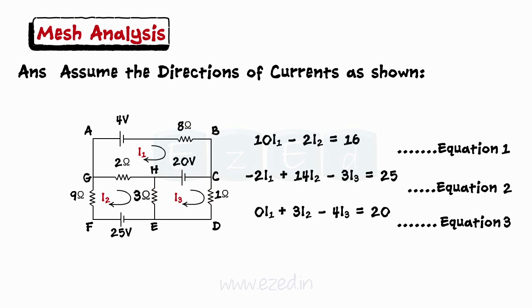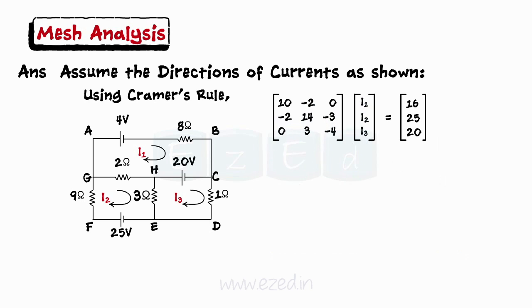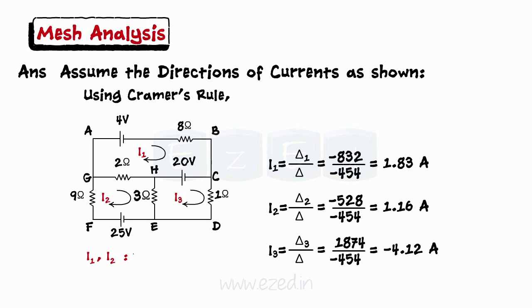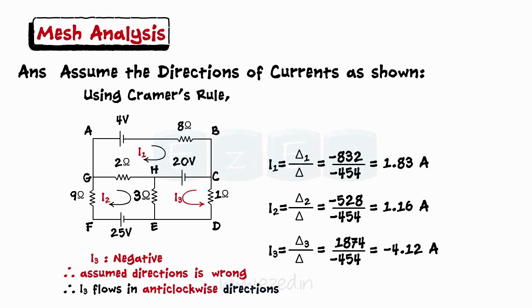Now, we have 3 equations and 3 unknowns. Thus, by using Cramer's rule, we get the values of 3 currents as I1 equals 1.83 Amperes, I2 equals 1.16 Amperes, and I3 equals minus 4.12. As I1 and I2 are positive, our assumed directions are correct, but I3 comes out to be negative. This concludes that the assumed direction for I3 is wrong and the I3 actually flows in an anti-clockwise direction.